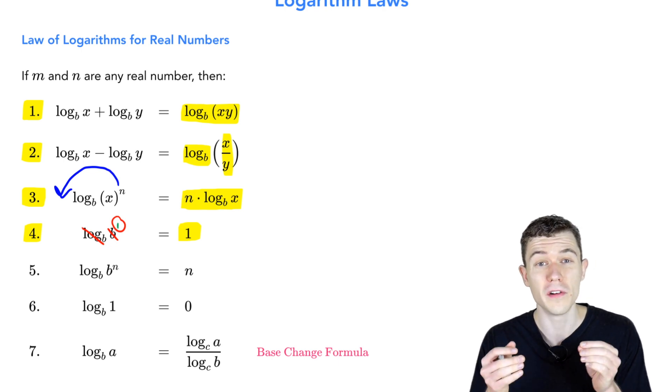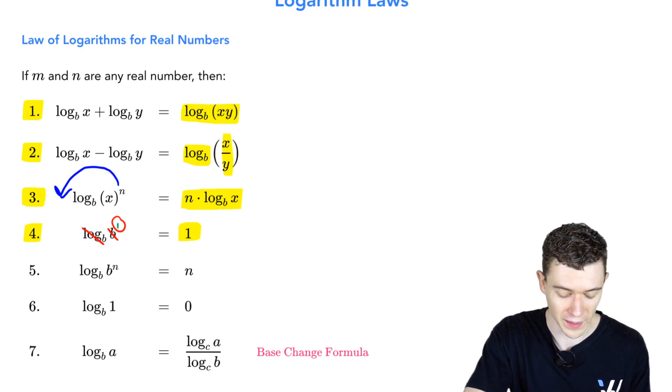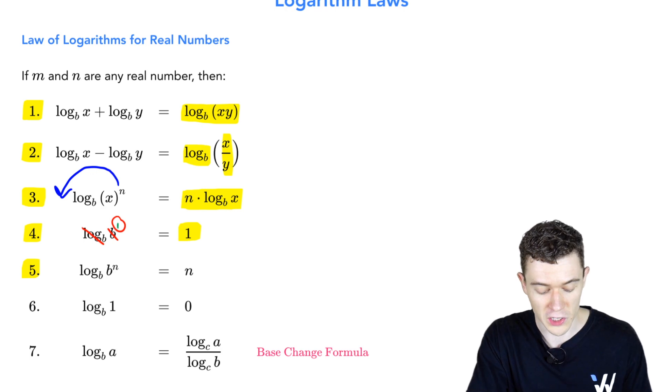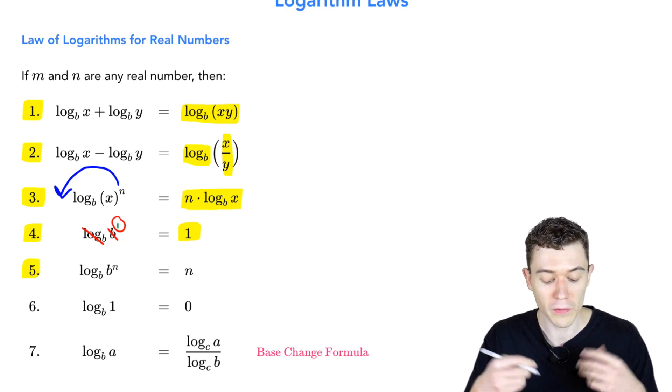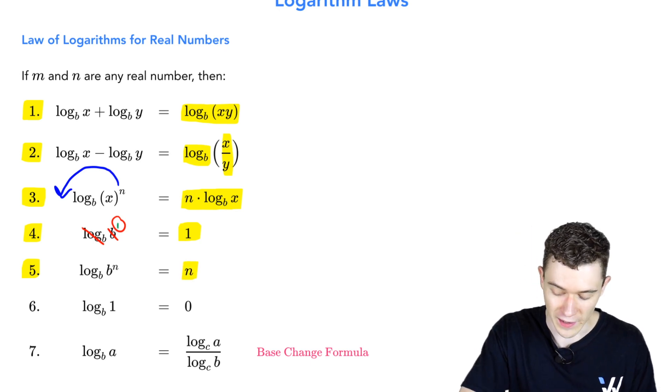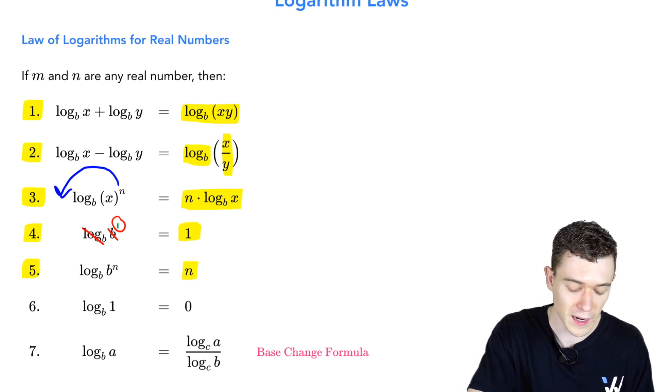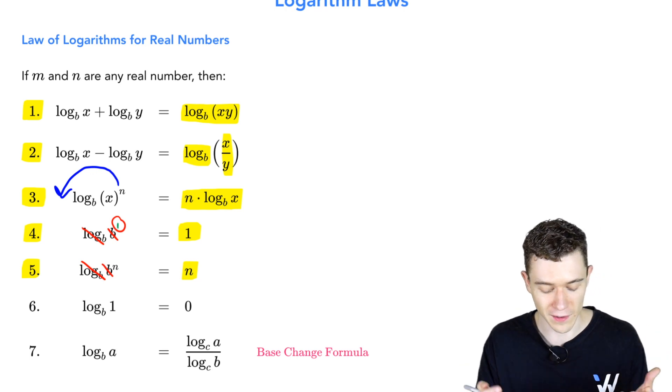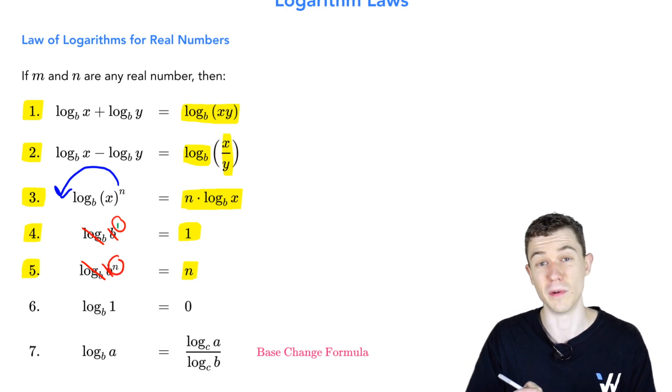Number 5 directly follows if we think about that in the same way. Number 5 is just the general version of number 4. If we have log base b of b to the n power, well, that's just n. In other words, like I said last time, the log base b and the b cancel out. We're just left with that exponent n.